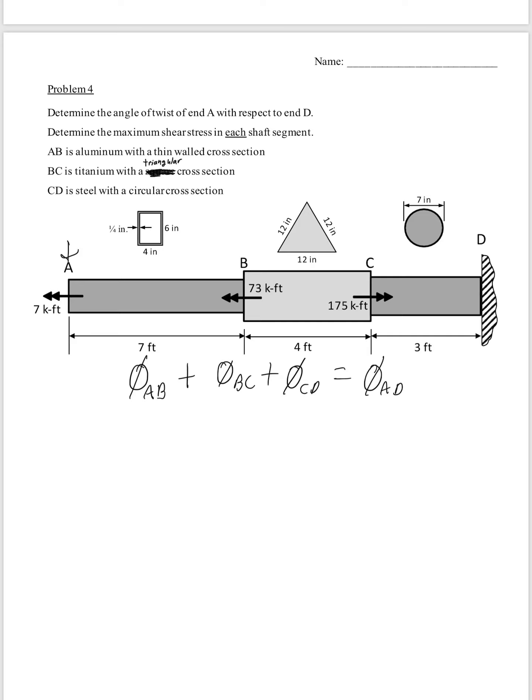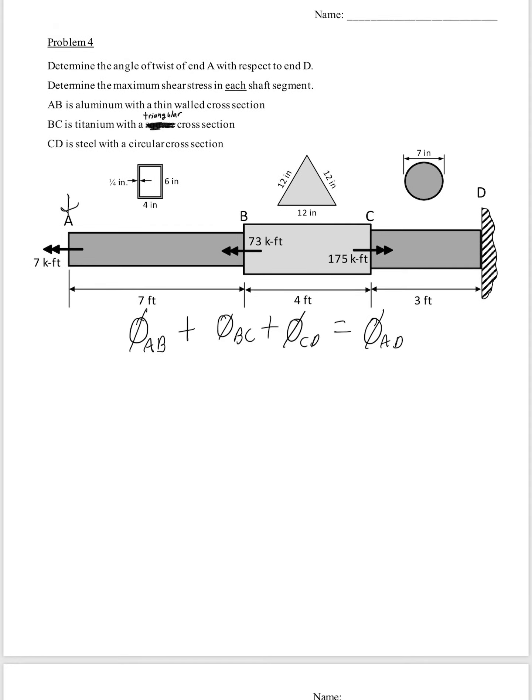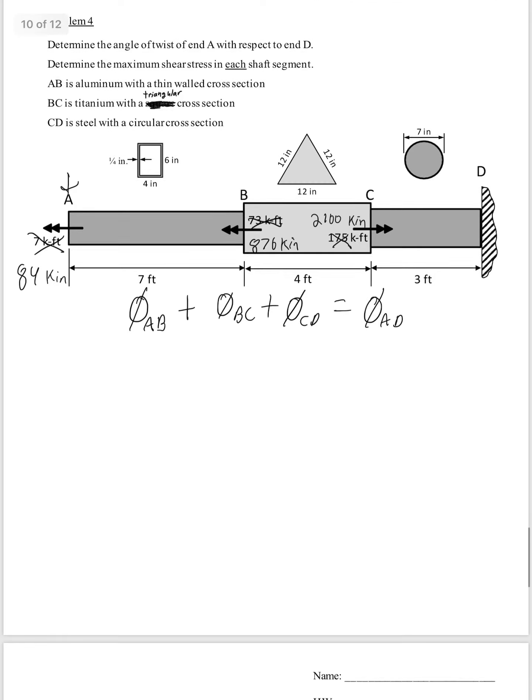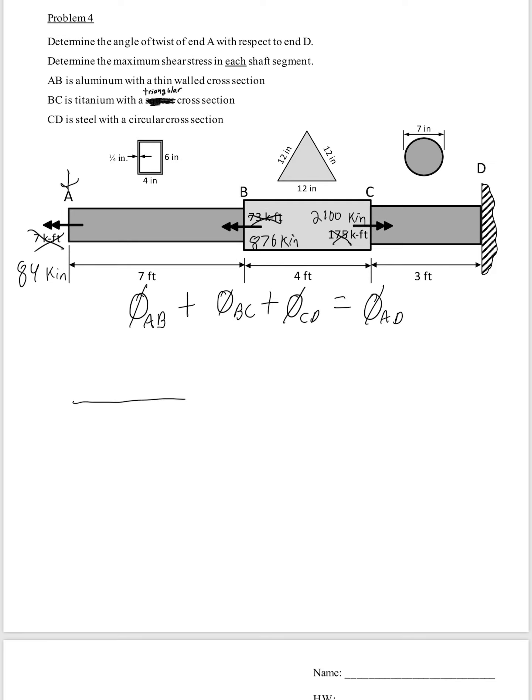So this first step is to find out what's the torque in each segment. So all these are given in kip feet. I'm going to multiply them by 12 to get them in kip inches. So this 7 really becomes 84 kip inch. 73 times 12 becomes 876 kip inch. And 175 becomes 2100 kip inch. So you could do a free body diagram of each segment and find the torque that way. Or you can just do a torque diagram, which is what I prefer to do.